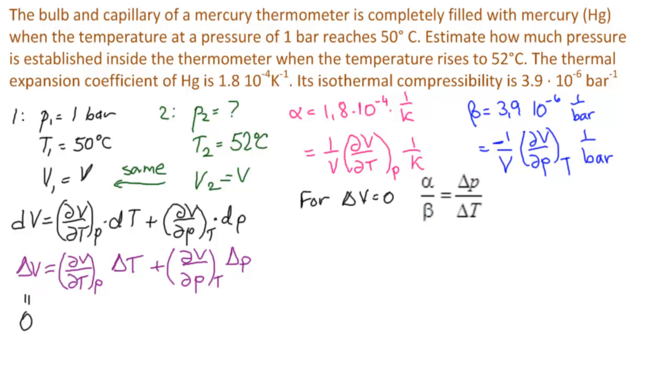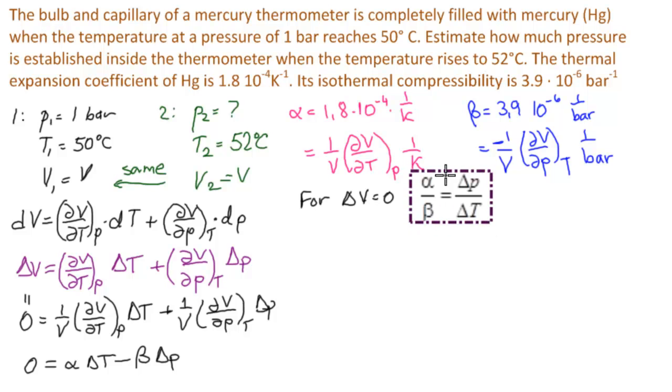And we already decided that this is equal to 0. So then we can multiply through by 1 over V. And what we get is 0 equals alpha delta T minus beta delta P. And if we solve this, we will get exactly this. So that's where this formula comes from.